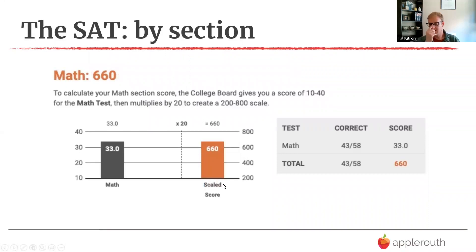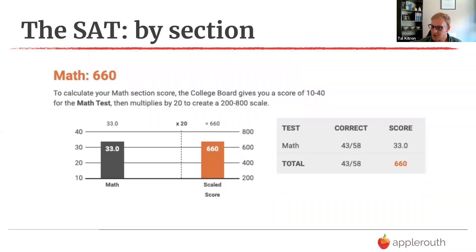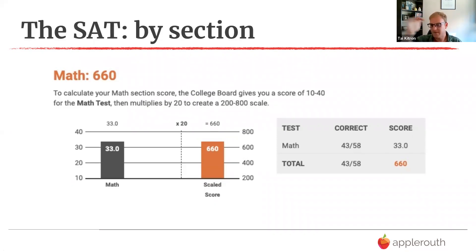On the math score, it's out of 40 and they double it and add a zero. A raw score of 43 out of 58 means 15 missed questions, which costs 140 points — going from 800 to 660. Every question missed at a high level is worth about 10 points, and then that curve evens out further down. So 15 misses and 140 points lost is still a great score.